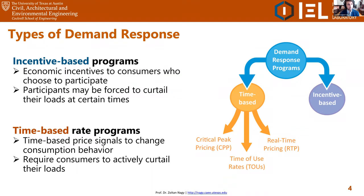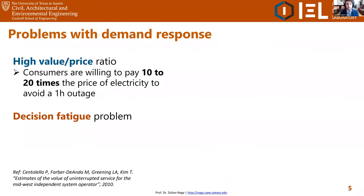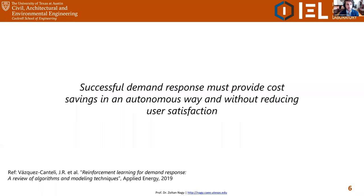The main challenges with demand response are that electricity is a commodity with very high value — consumers are typically willing to pay 10 to 20 times the price of electricity just to avoid a one-hour outage. We also have the decision fatigue problem: consumers don't typically want to be tracking electricity prices at all times to modify their habits. Therefore, the main conclusion is that to have a successful demand response product, we must automate it without penalizing the satisfaction and comfort of consumers.